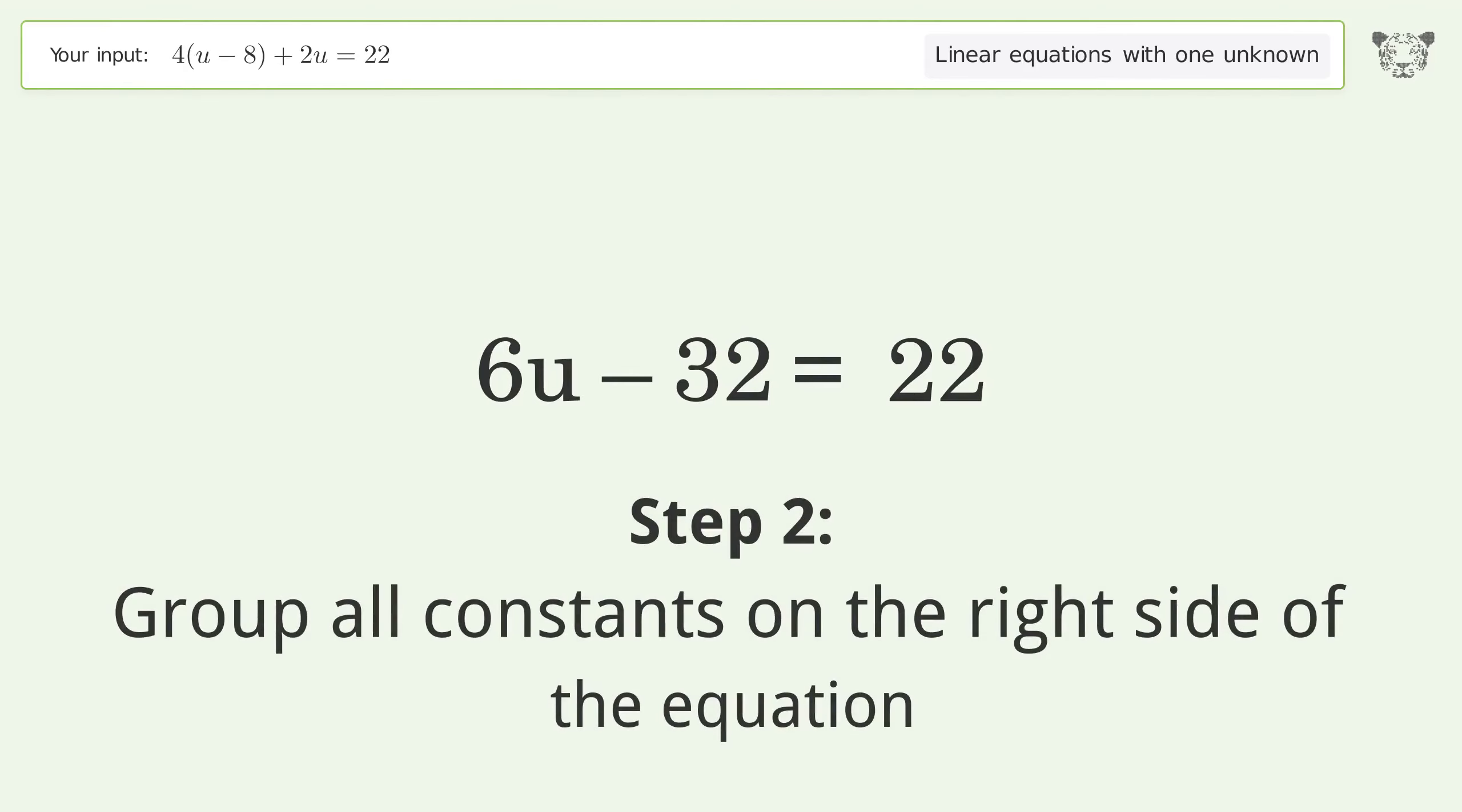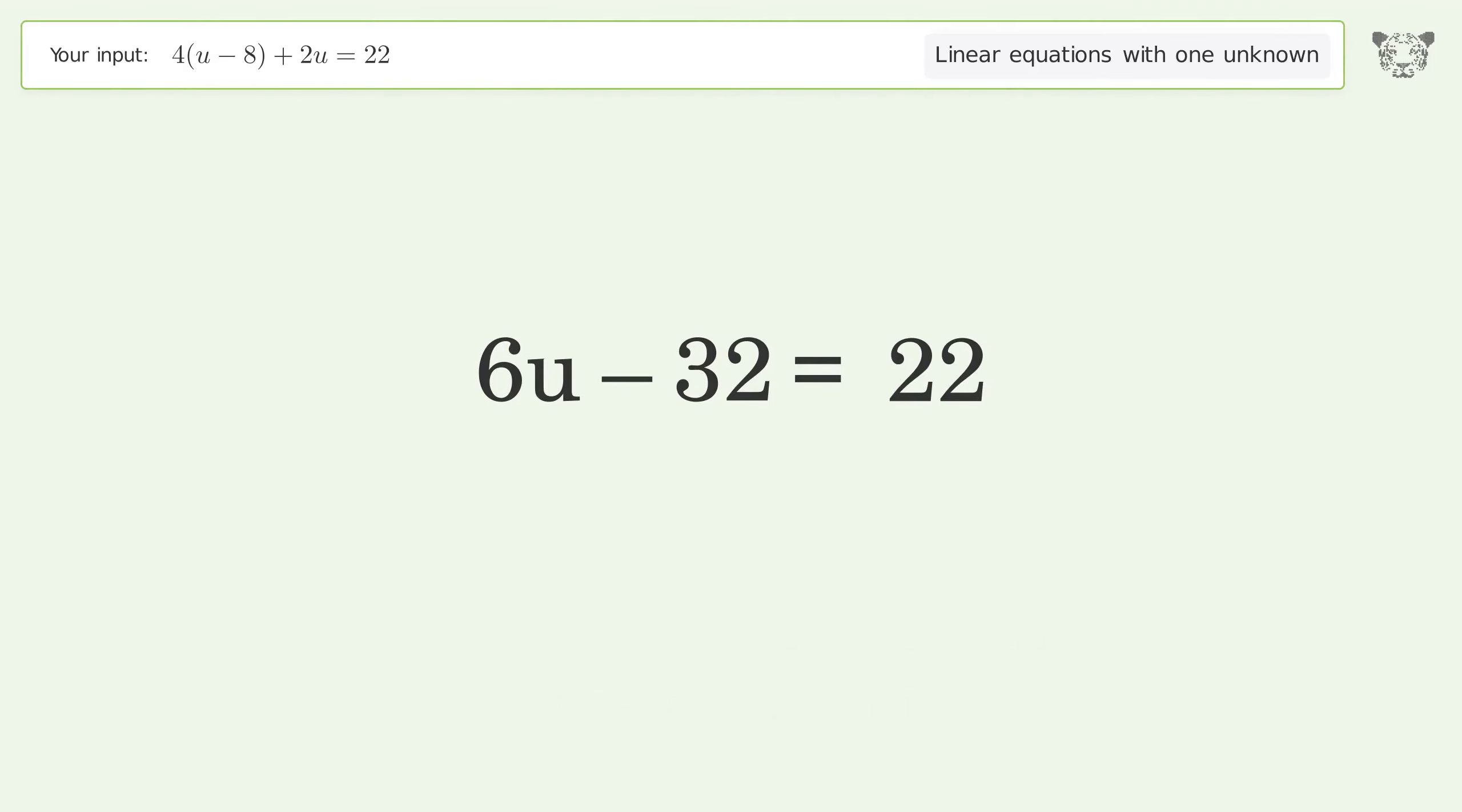Group all constants on the right side of the equation. Add 32 to both sides. Simplify the arithmetic.